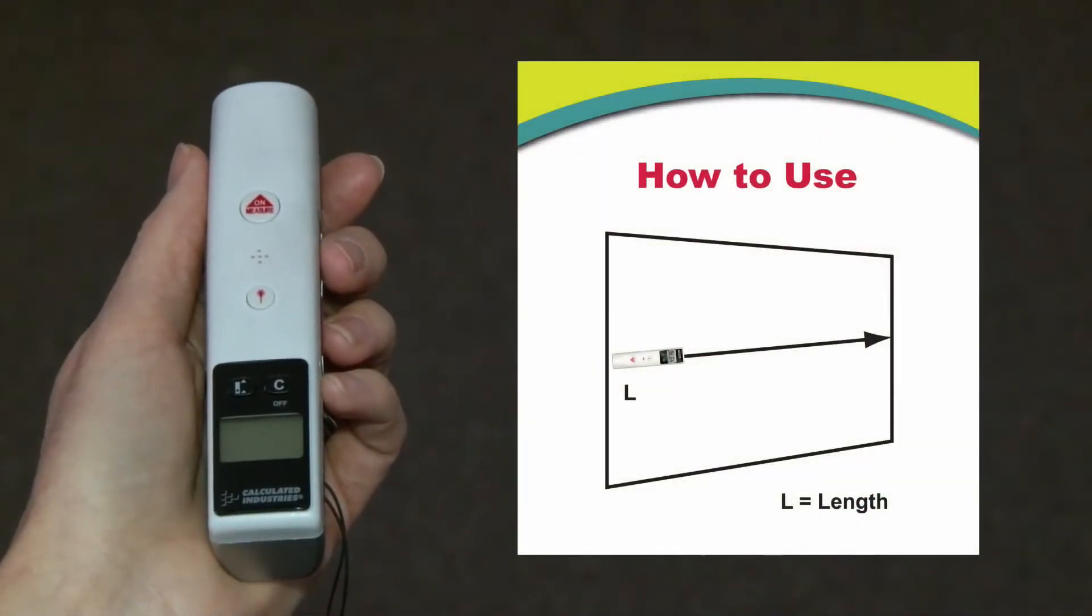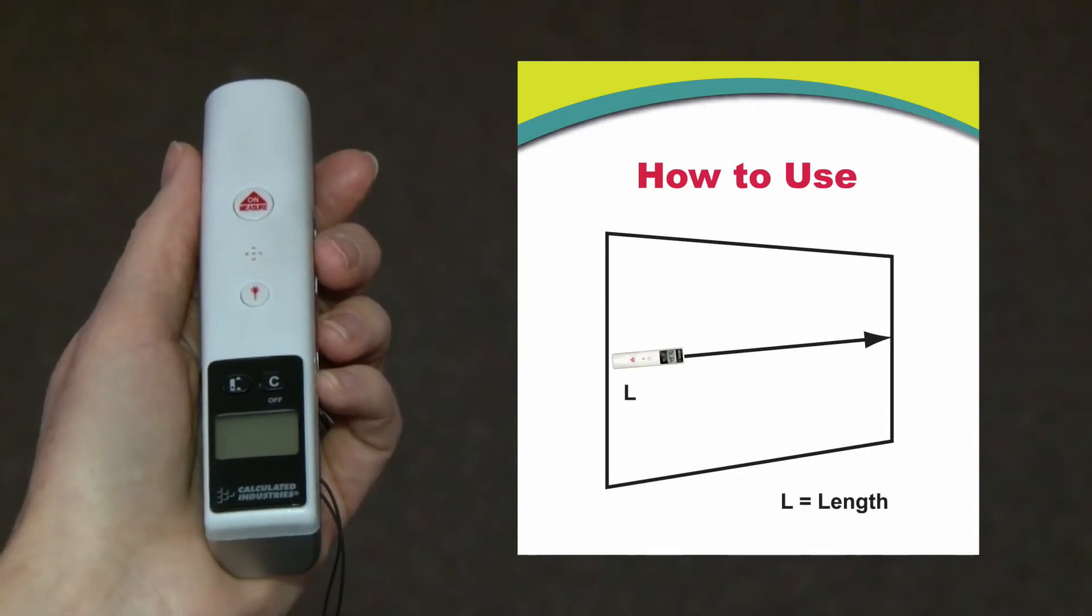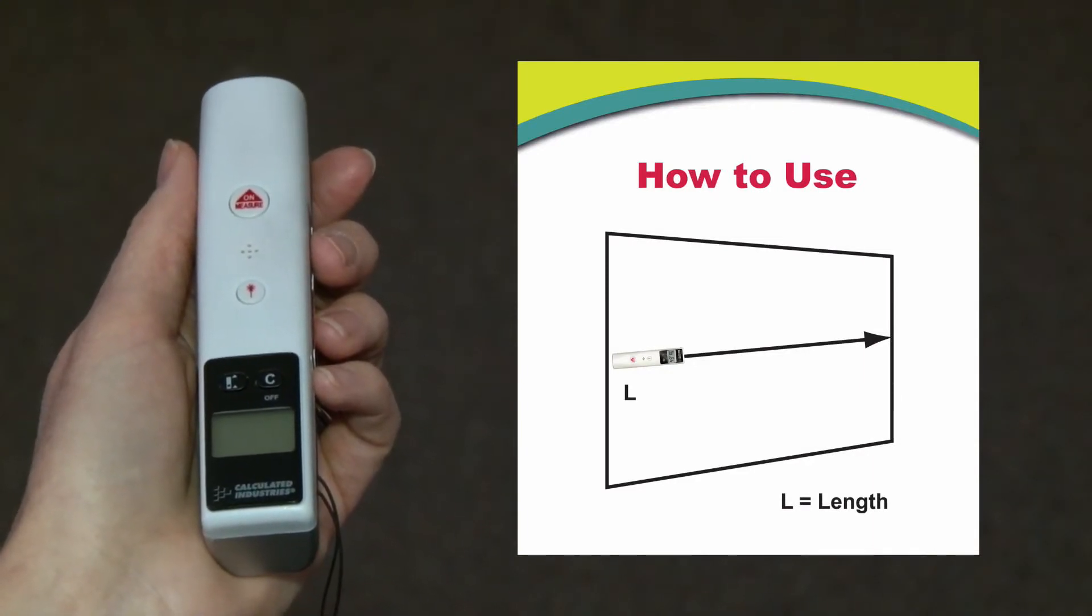The Laser Dimension Master 2 allows you to perform quick and accurate indoor measurements from 20 inches up to 50 feet with 99% accuracy.